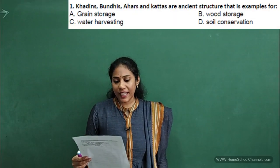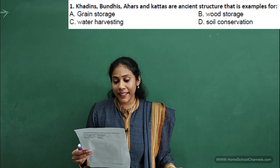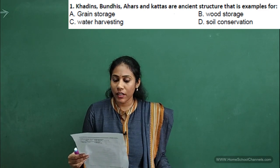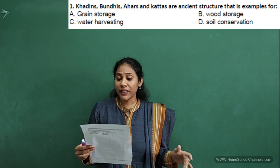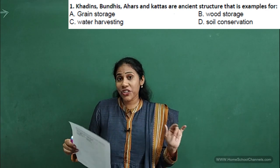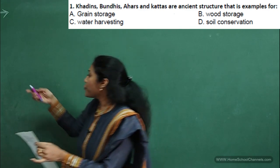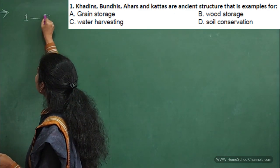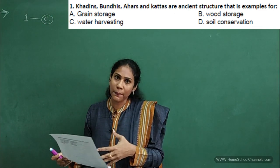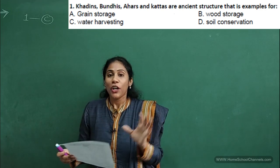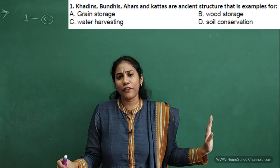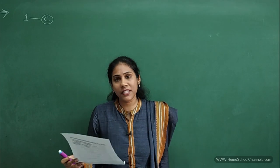Question 1: Khadins, Bandis, Ahars, and Kattas are examples of — grain storage, wood storage, water harvesting, or soil conservation? We just discussed that they are all traditional water harvesting techniques. So the answer is option C — water harvesting. Most questions from these two chapters are direct, so if you revise the concepts explained here, you can answer any question with confidence.